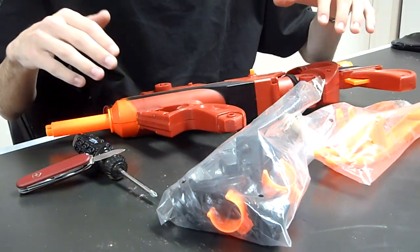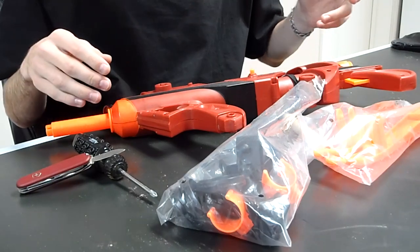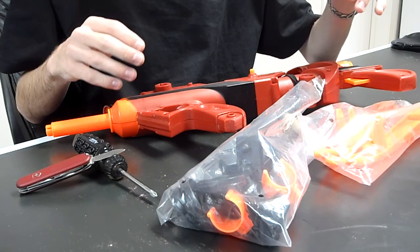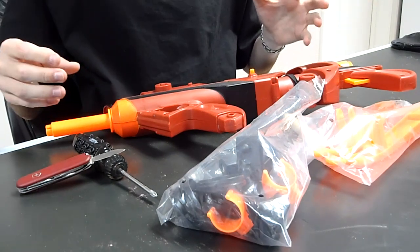Hey guys, so I'm doing my basic Big Bad Bow mod tutorial. We're going to be taking out the air restrictor. This thing has a ridiculous amount of power in it. It's really crazy how excited I am to start playing with it.